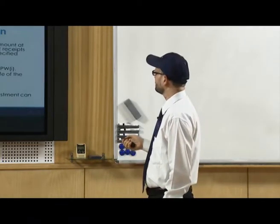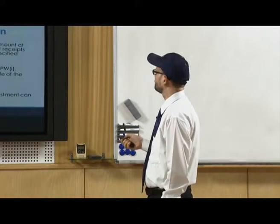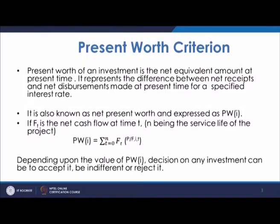It is known as present worth and we express it as PW(i), where i indicates the particular rate of interest. If Ft is the net cash flow at time t and n is the service life of the project, then PW(i) can be written as the summation from t equal to 0 to n of Ft multiplied by the factor P/F, i, t.